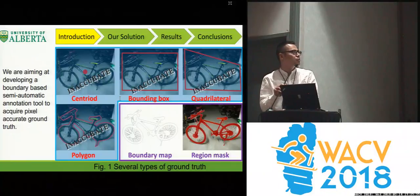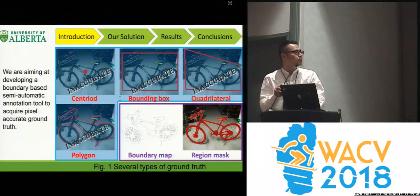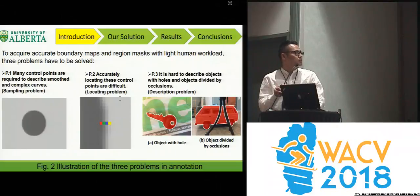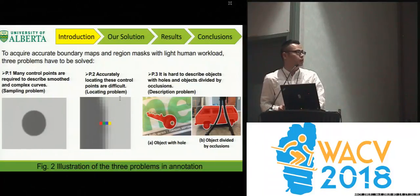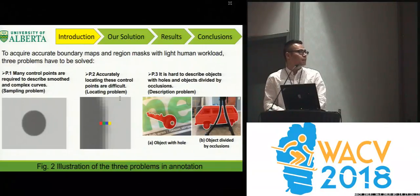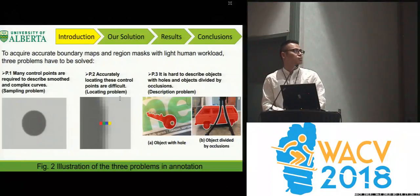In this paper, we aim at developing a boundary-based semi-automatic annotation tool to acquire pixel-accurate ground truth. There are three problems to be solved. First, many control points are required to describe smooth complex curves — we call this the sampling problem. Second, accurately locating these control points is difficult — we call this the locating problem, as it is hard for humans to decide which RGB pixel to pick. Third, it's hard to describe objects with holes and objects divided by occlusions — we call this the description problem.